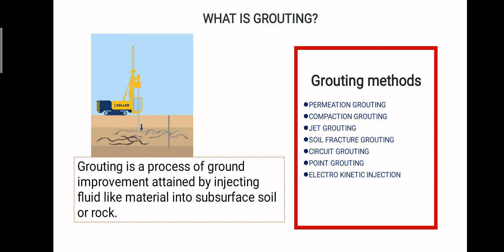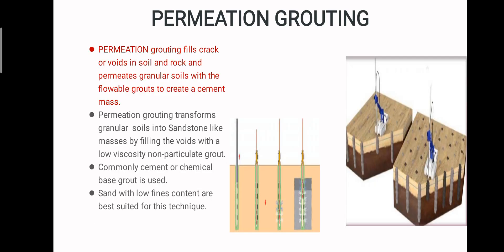The first one is permeation grouting. If the grout material can be filled in the voids between the soil particles without appreciable movement of the surrounding material, the process is referred to as permeation grouting. This technique is generally used to reduce the permeability or to strengthen and stiffen the ground.